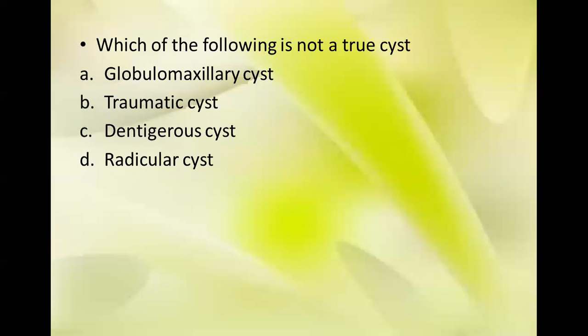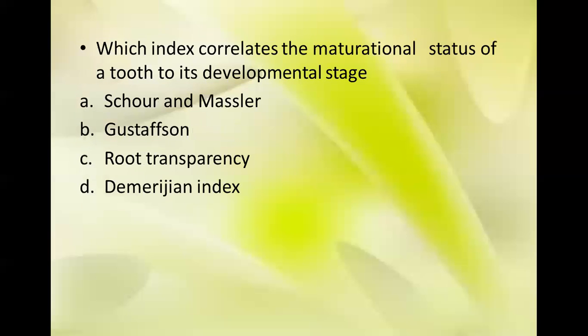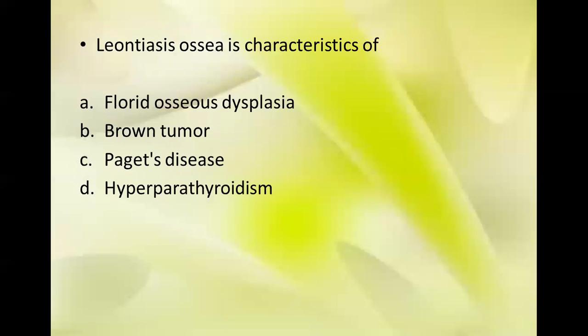Which of the following is not a true cyst? Options: globulomaxillary cyst, traumatic cyst, denture cyst, and radicular cyst. The answer is traumatic cyst — it is not a true cyst. Next: which index correlates the maturation status of a tooth to its developmental stage? Options: Schour and Massler, Gustafson root transparency, and Demirjian index. The answer is D, Demirjian index.